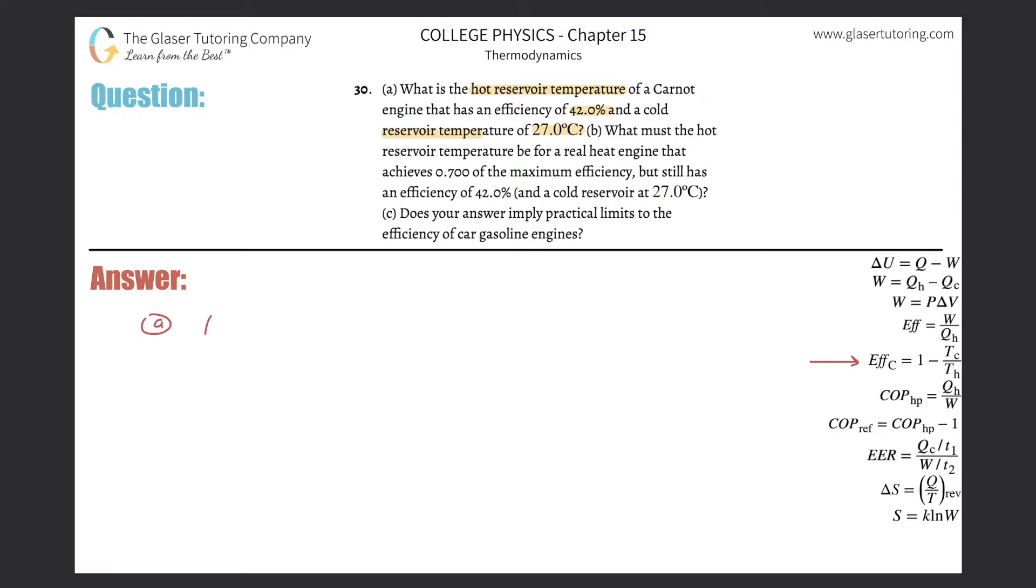So this is letter A. It says the efficiency of a Carnot engine is equal to 1 minus the temperature of the cold reservoir divided by the temperature of the hot. And we are asked to find the hot, so we basically got to do a little algebra manipulation to solve. So we're just going to switch these two essentially mathematical terms.